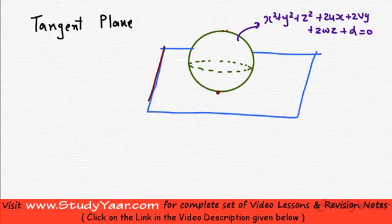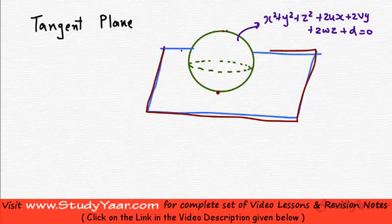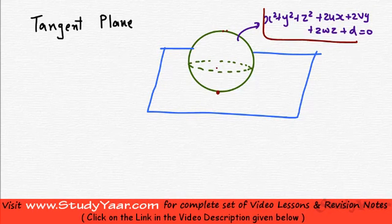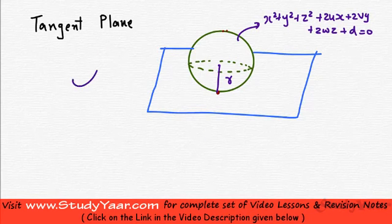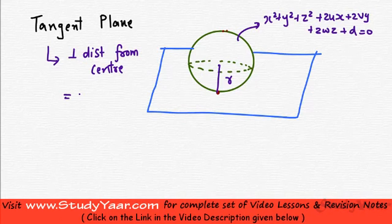I want to find out the equation of this plane given the equation of the sphere which is this. Just understand one more thing. Your perpendicular distance from the center to this particular plane is going to be the radius of the sphere. So another way to look at a tangent plane is a plane whose perpendicular distance from the center of the sphere is equal to the radius of the sphere.